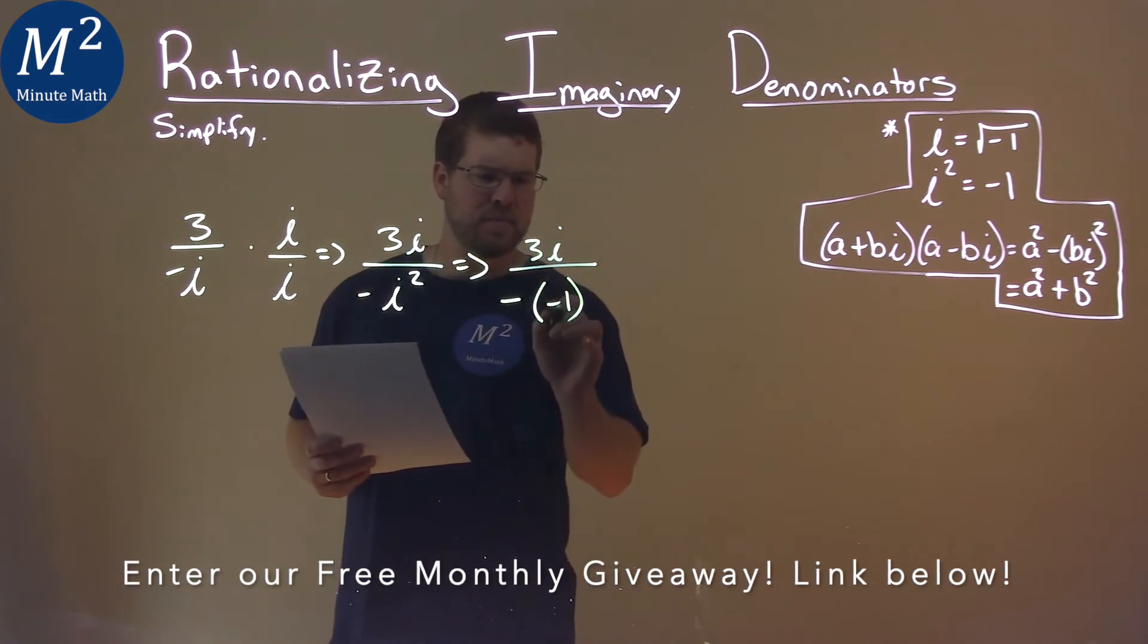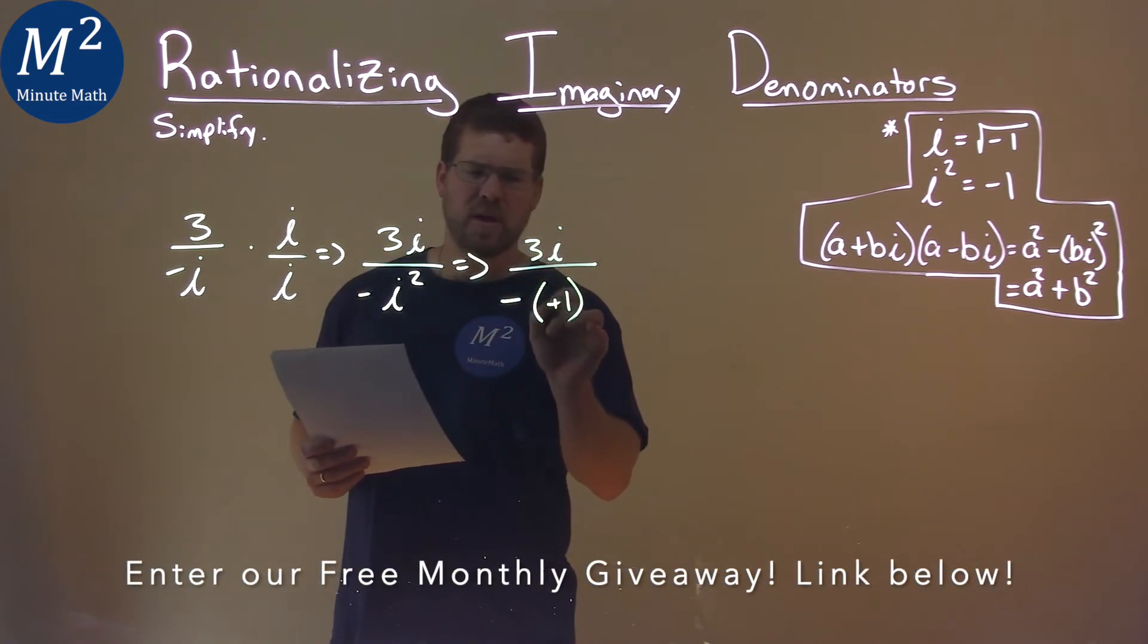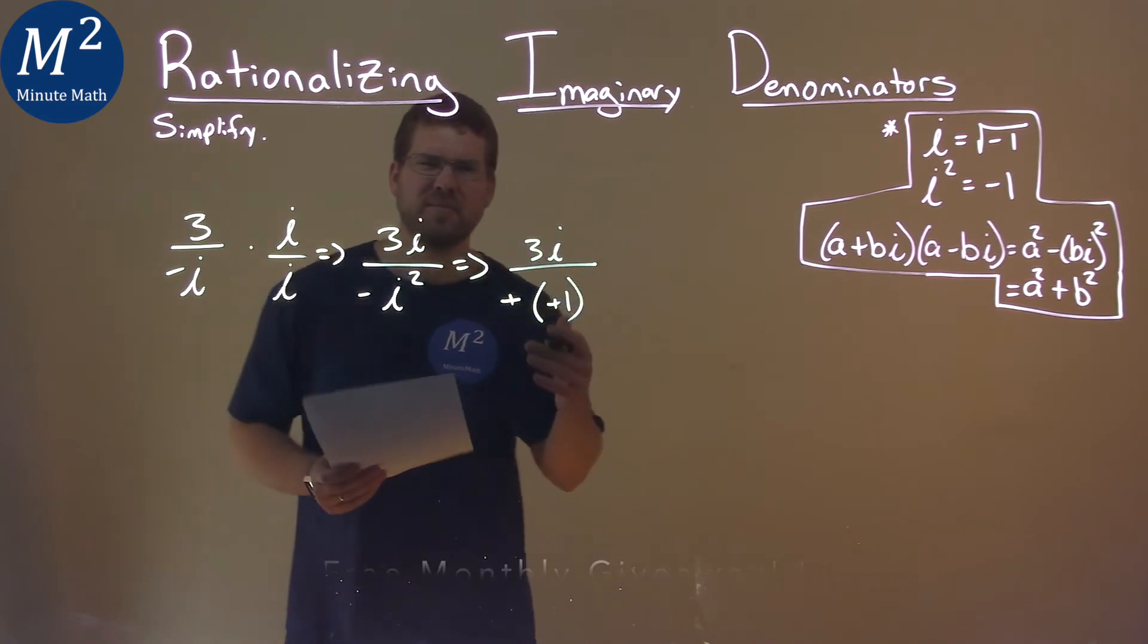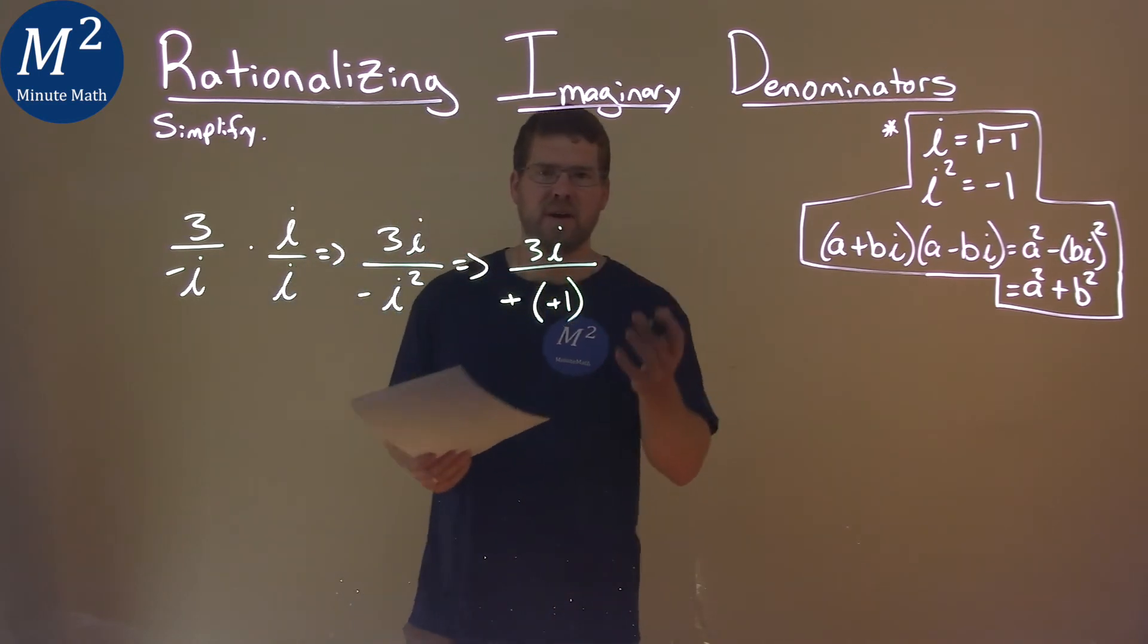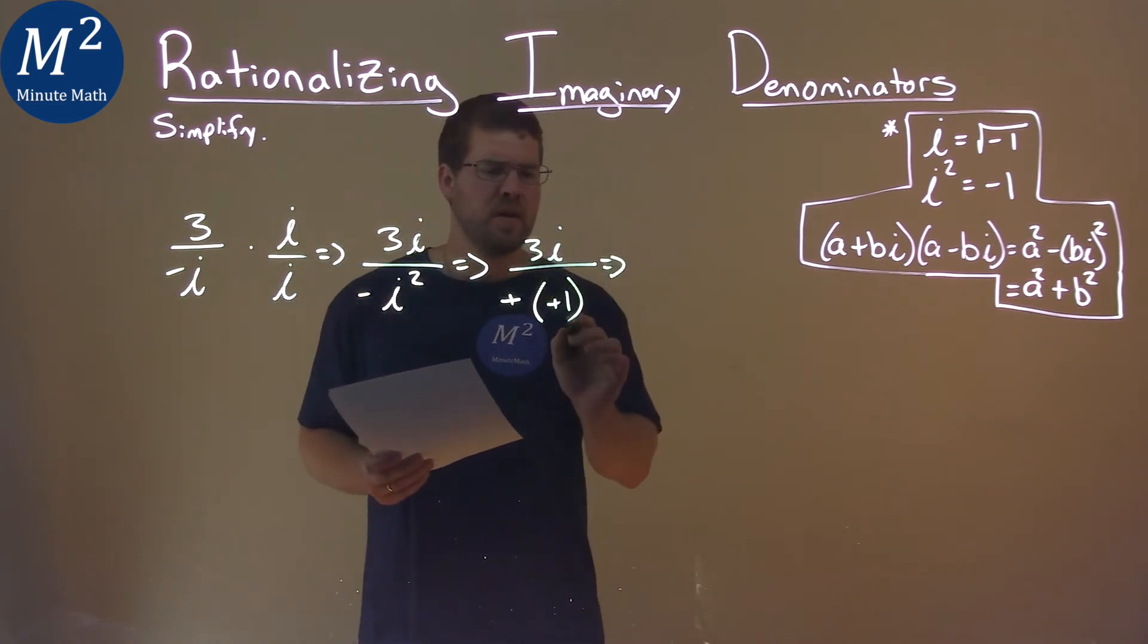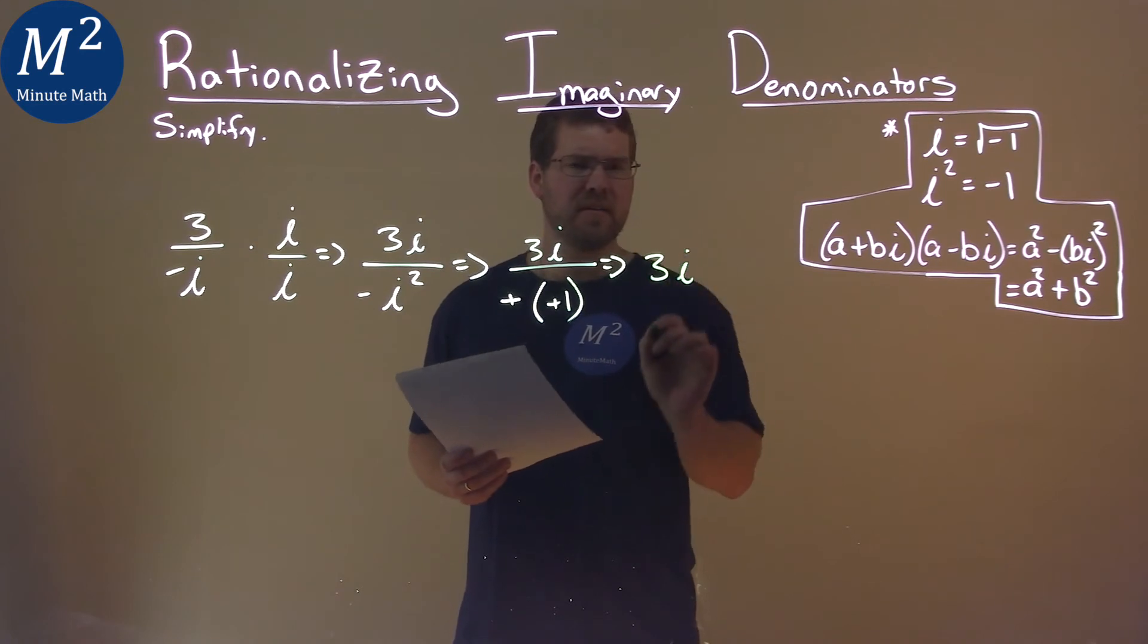Well negative 1 times, or negative times a negative 1 is a positive 1, and we don't really need to write divided by a positive 1. So we're just left with 3i, and that's it.